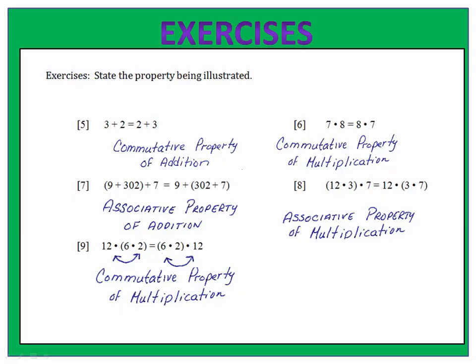Exercise seven shows us that if we're adding three numbers — nine, three hundred two, and seven — it doesn't matter which two we add first. Nine plus three hundred two, then add seven; or three hundred two plus seven, then add nine. That's the associative property of addition. Exercise eight shows us the same thing but with multiplication. We have three numbers to multiply: twelve, three, and seven. Twelve times three, then times seven, is the same as three times seven times twelve. That's the associative property of multiplication.